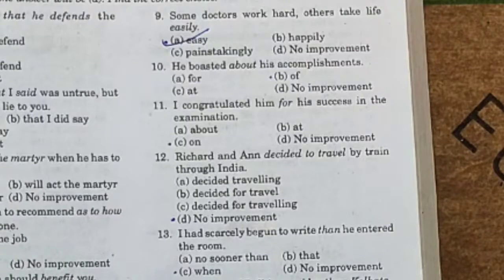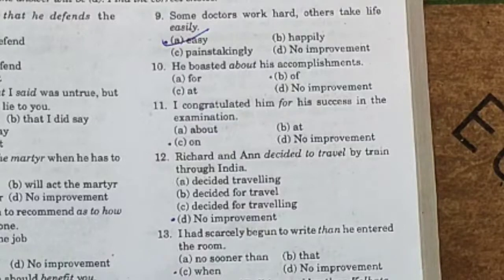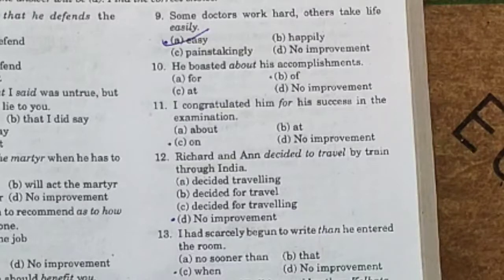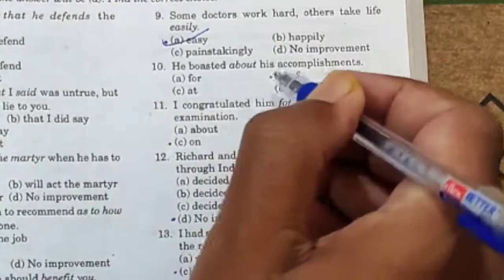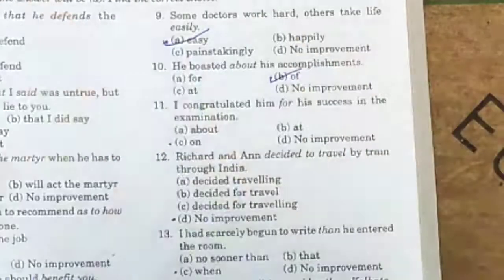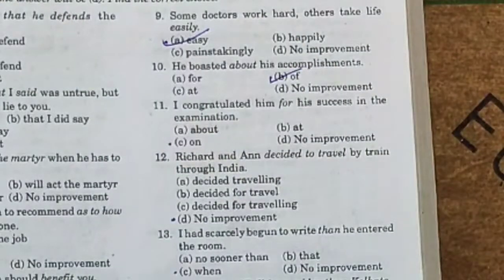Now sentence number 10: 'He boasted about his accomplishments.' Boasted means to brag. Option A: for. Option B: off. Option C: at. Option D: no improvement. After 'boasted', the preposition 'off' is always used, not 'about'. So 'about' will be replaced by 'off'. The correct answer is option B: off.